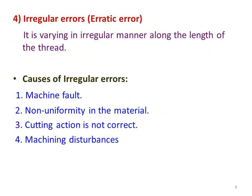The last type is irregular errors, also called erratic errors. These errors vary in an irregular manner along the length of the thread. The causes of irregular errors are: machine fault, non-uniformity in the material, improper cutting action of the manufactured threads, and machining disturbances such as heavy vibrations and noise in the machine while the screw threads are being cut or manufactured.